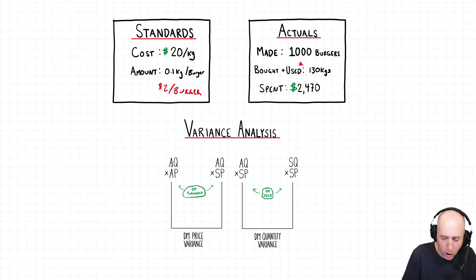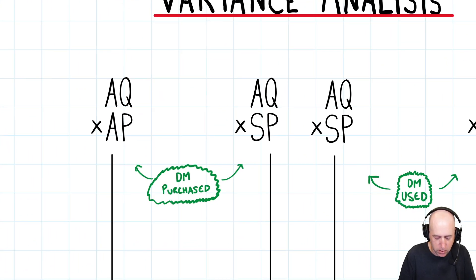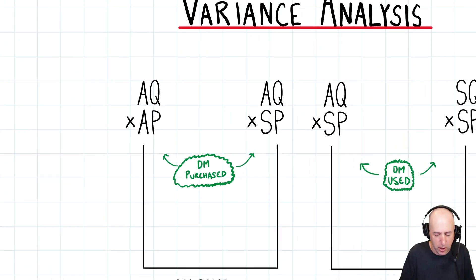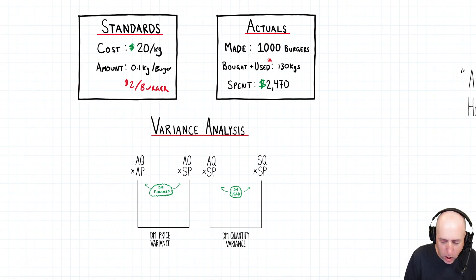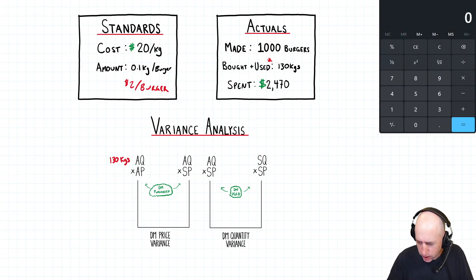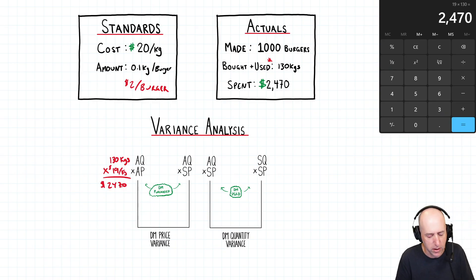So the first one, AQAP, actual quantity of beef purchased. Now you can see, I break it down into DM purchased. And over here, DM used. In this case, purchased and used will be the same, but we're still going to use the prongs here. So, the actual quantity Bill purchased was 130 kilograms. The beef purchased is measured in kilograms. The actual price is the actual price per kilogram. AP per unit. Actual price per kilogram. I'm going to need a calculator here. He purchased, he spent twenty four seventy dollars divided by 130 kilograms. He spent nineteen dollars per kilogram. That's his actual price per kilogram, nineteen dollars per kg. So, 130 times 19 is twenty four seventy dollars. That's the amount he spent on beef.